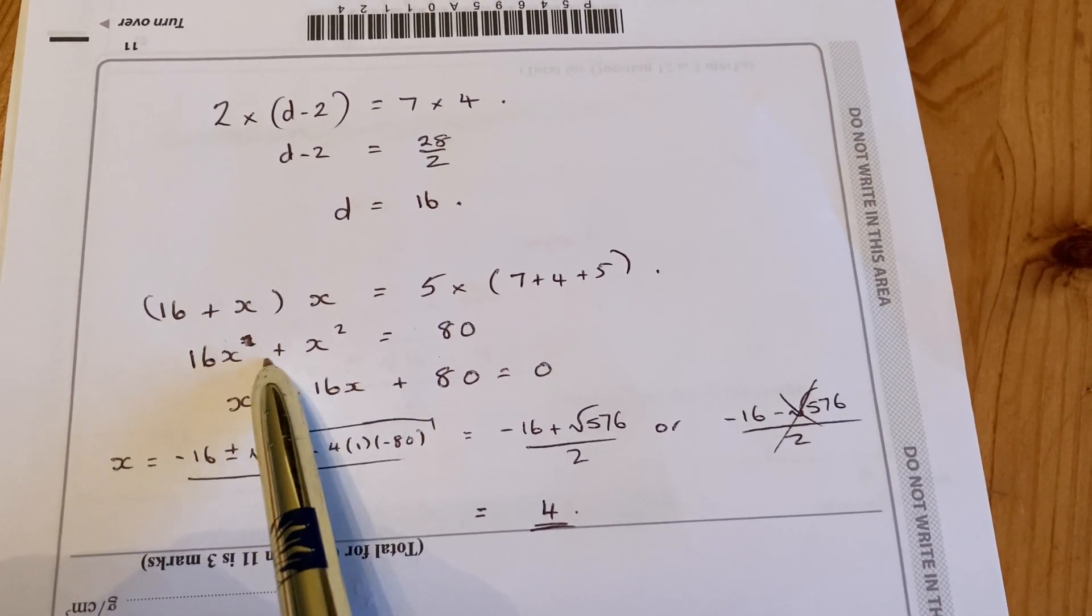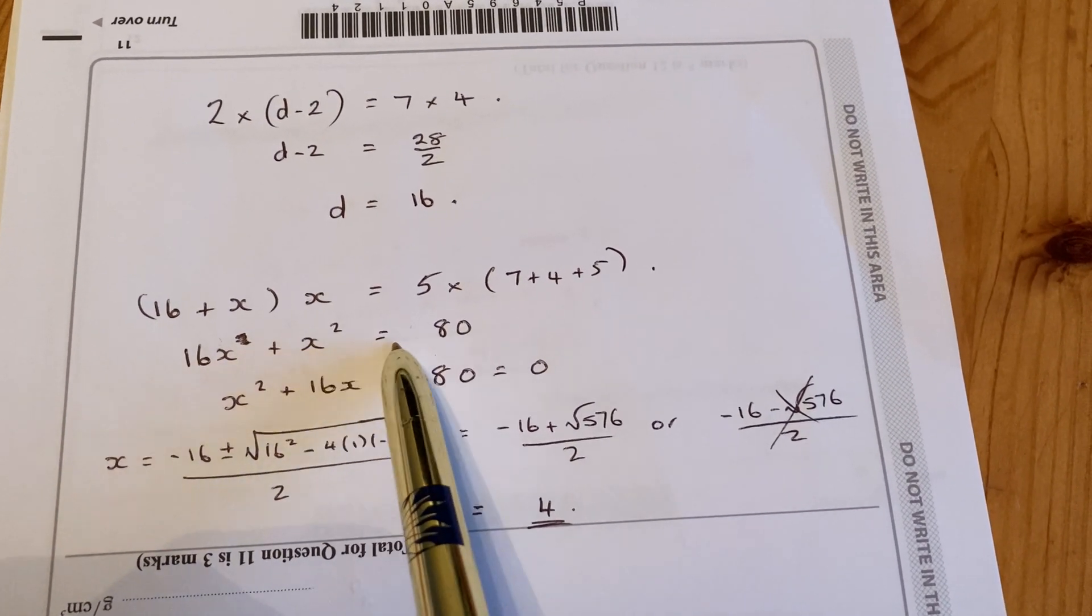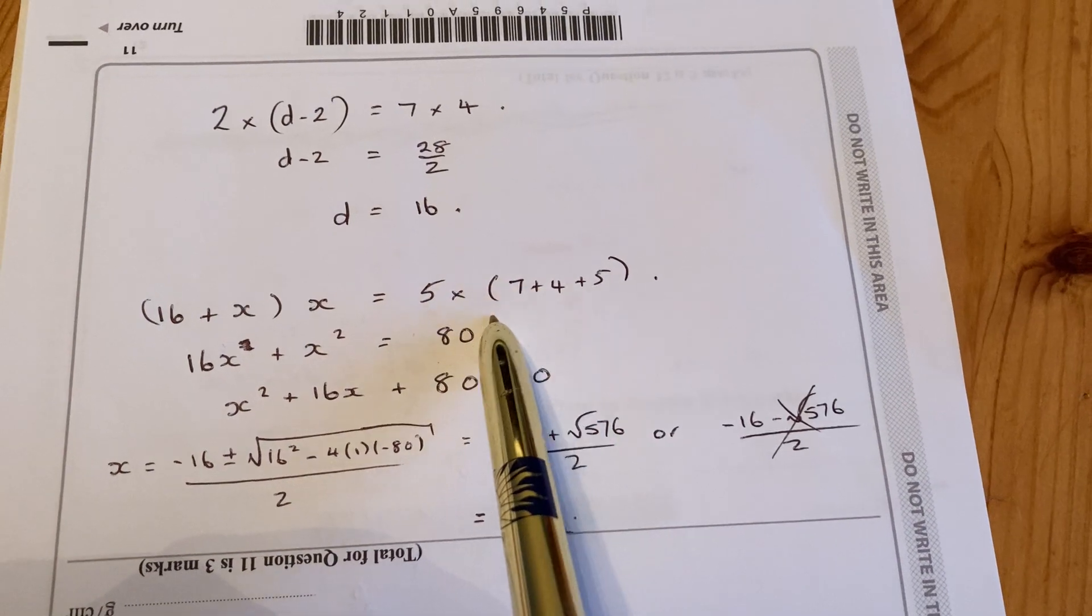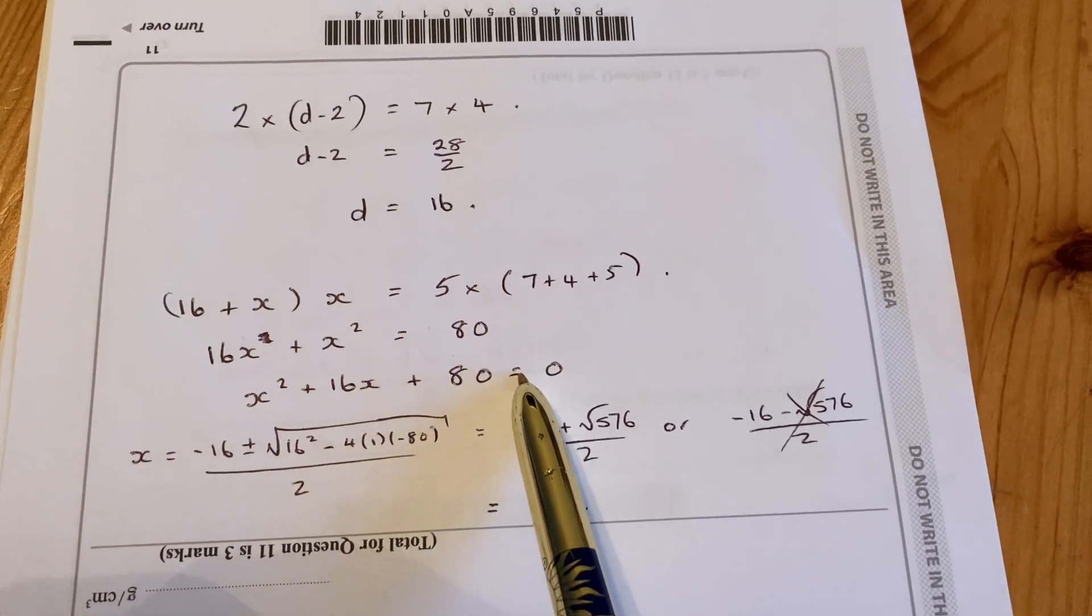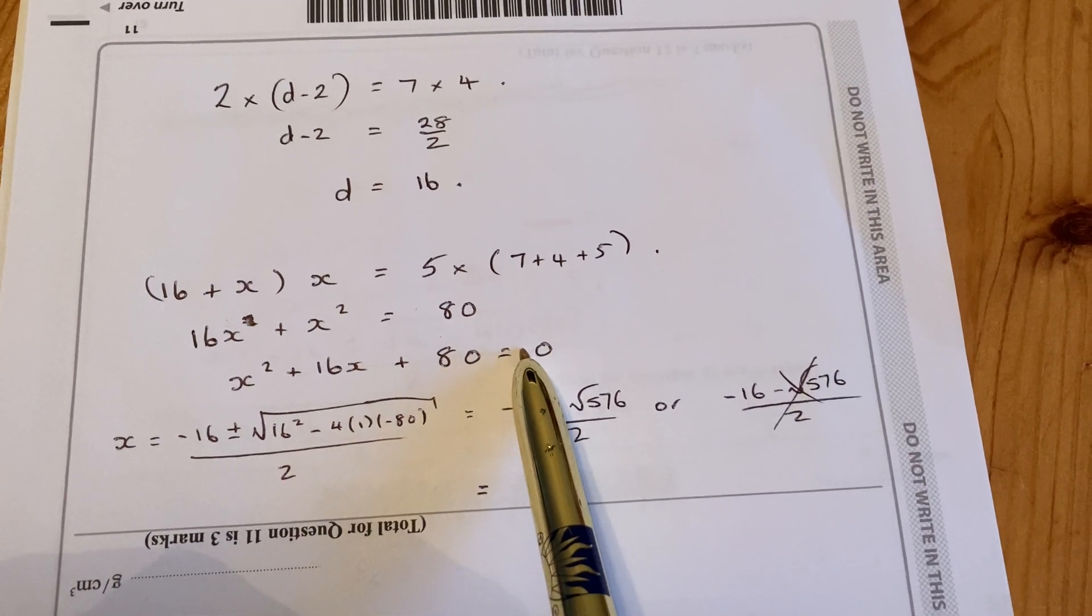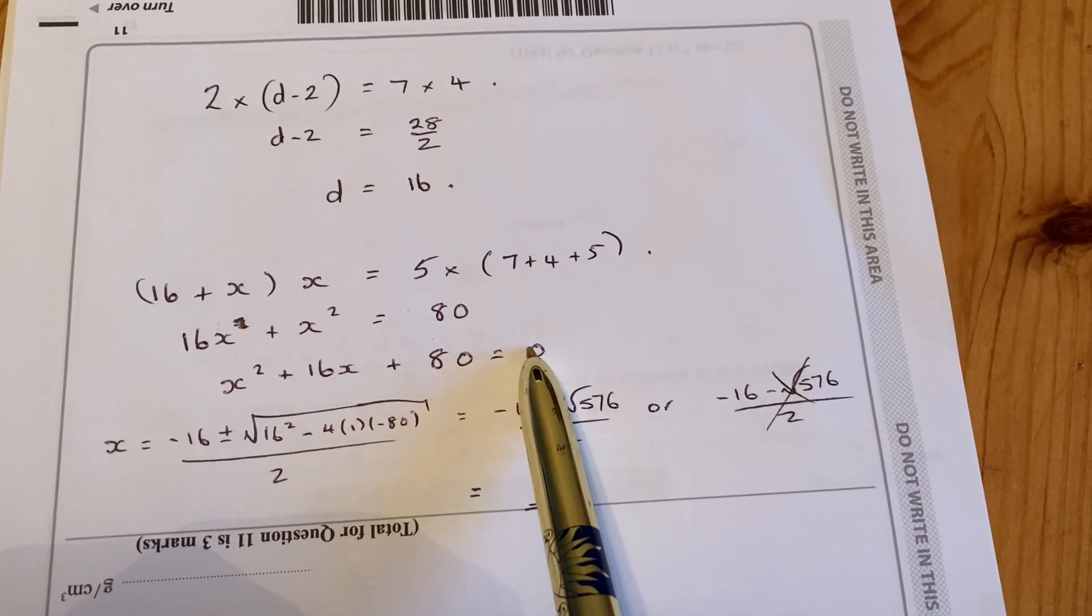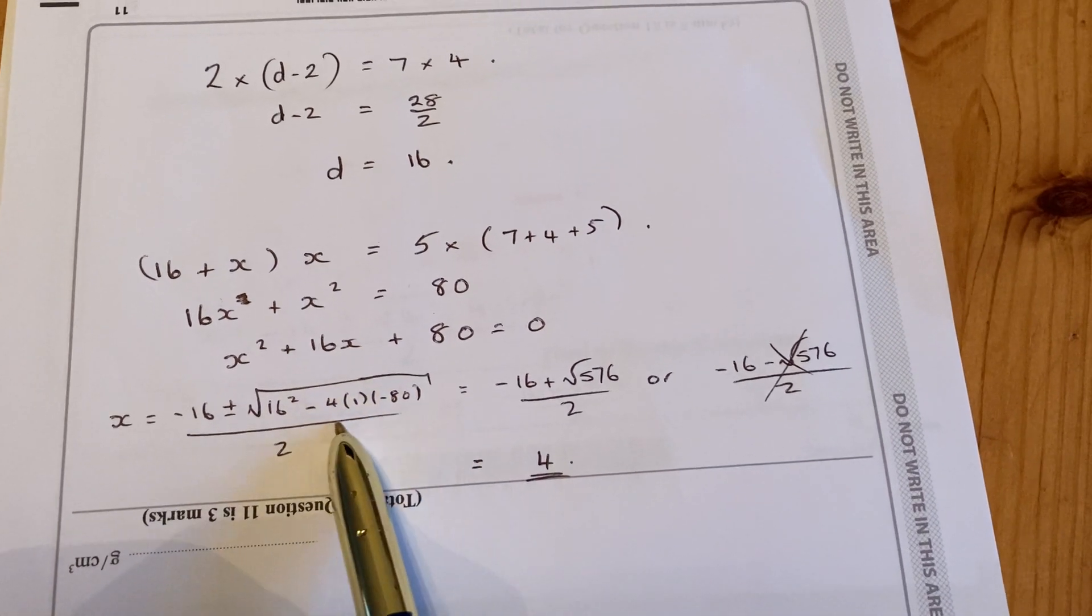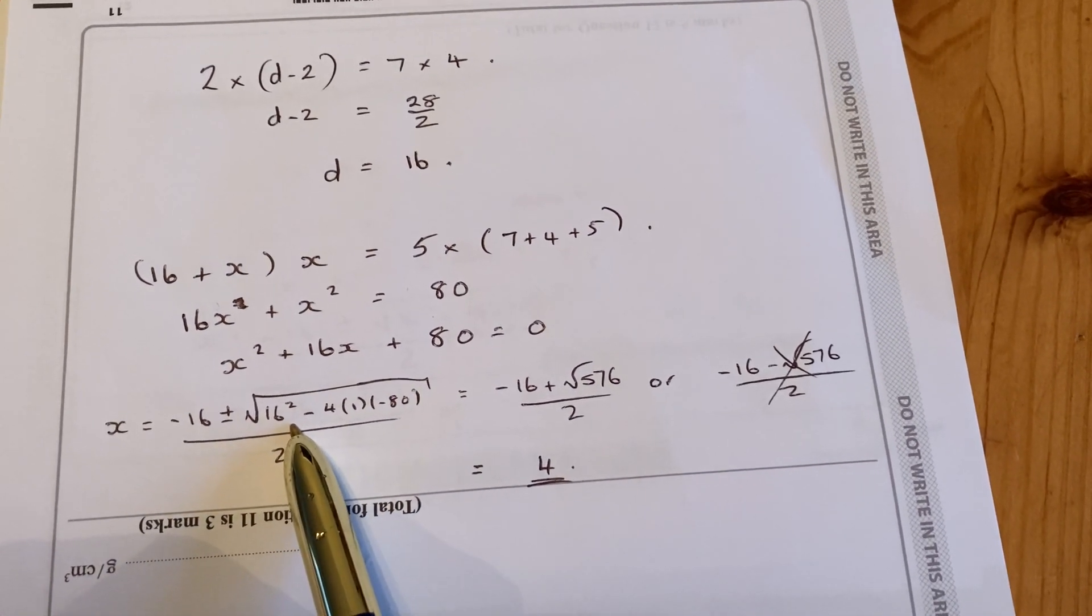Simplify the left, expand it out, 16x plus x squared equals, and on the right hand side multiply out you get 80. Form it into a quadratic equal to zero, not going to be one that you can factorize very easily. So let's put it into the formula as best we can.